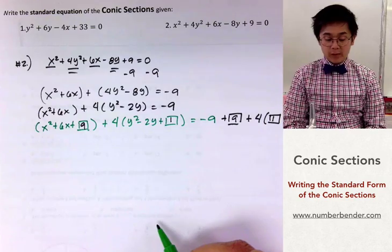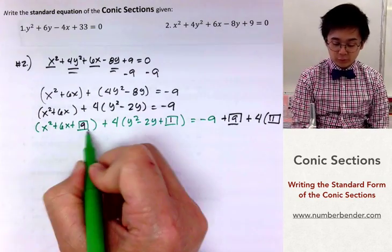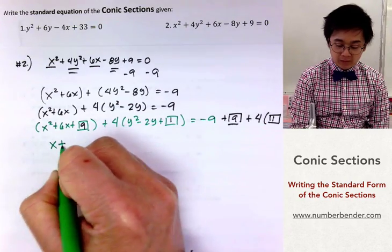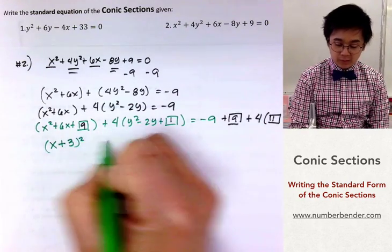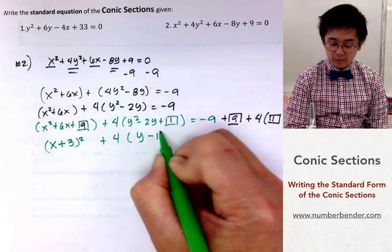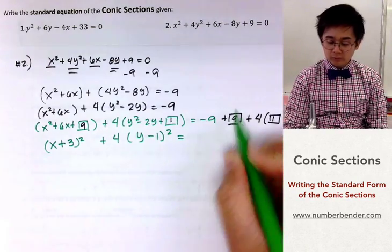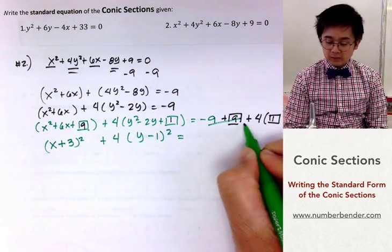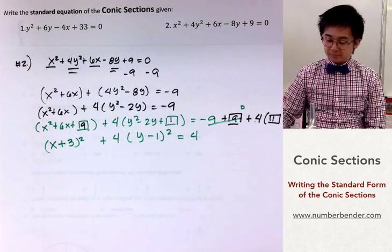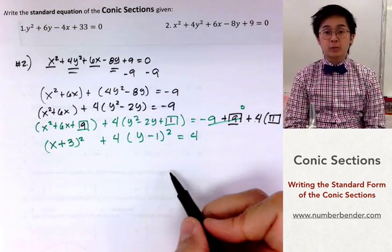So now we have two perfect square trinomials. For the first group it will be modified into x plus 3 squared. And the other group will be y minus 1 squared equal to negative 9 plus 9 plus 4 is 4.